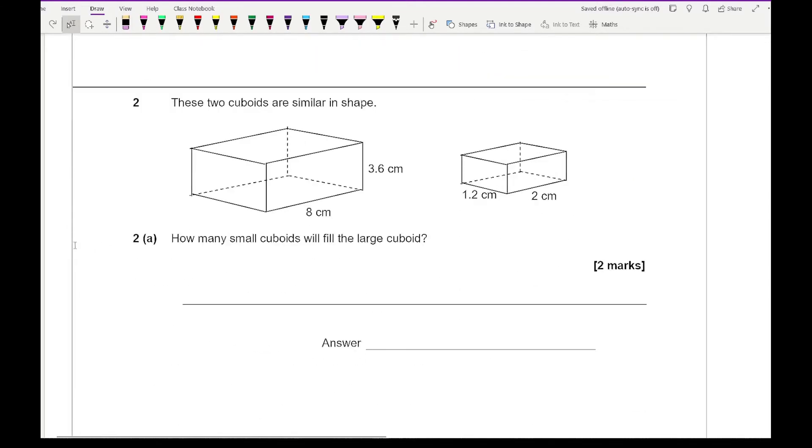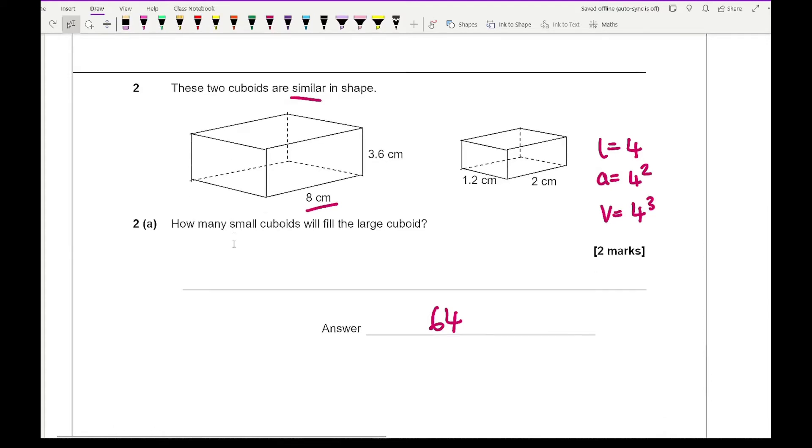Moving on to question 2, it says these two cuboids are similar in shape. How many small cuboids can we fit into the large cuboid? For this, what we need to do is look at, now the key in this particular question, it's not as obvious, is the word similar. So here we can see that the length scale factor is 4 and the area scale factor will be 4 squared and the volume scale factor is going to be 4 cubed. So here in terms of the volume, it's therefore going to be 64.